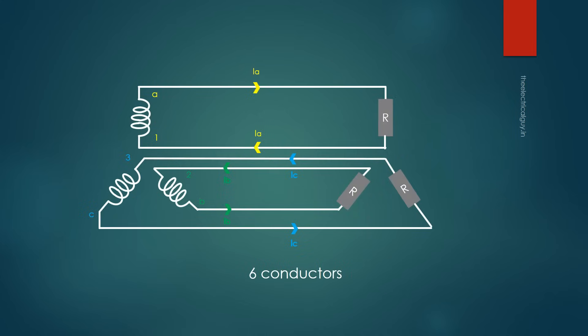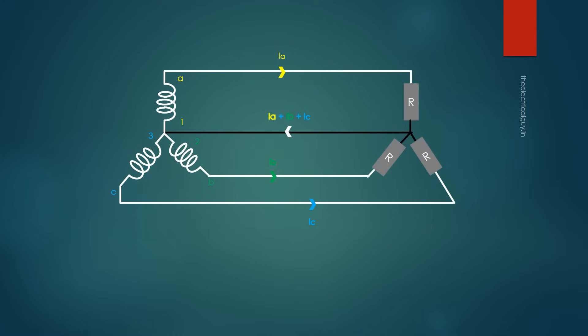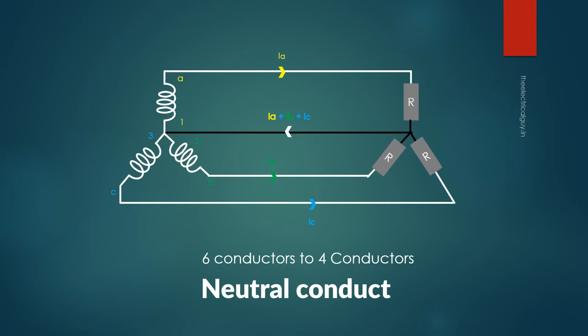The connection shown in this figure is one of the ways to connect a three-phase generator to the load. As you can see, this connection requires six wires. The three single-phase circuits shown are electrically independent. However, we can combine the three return conductors together to form a single return conductor, saving the cost of two conductors — reducing from six to four. This common return conductor is called the neutral conductor.